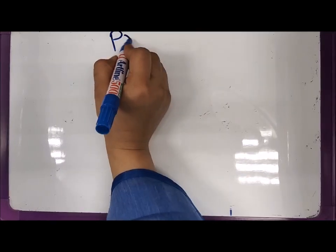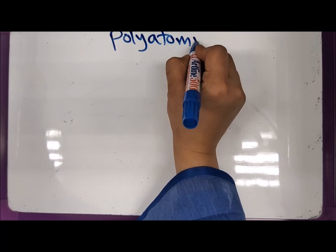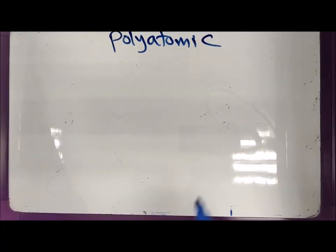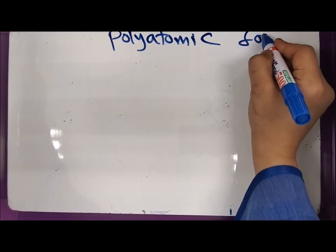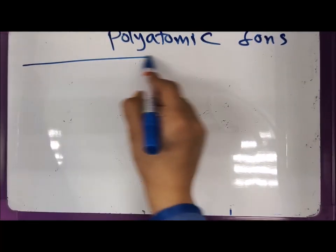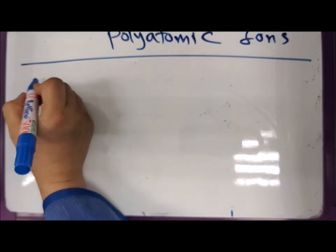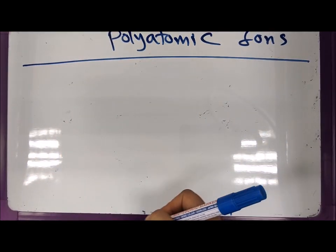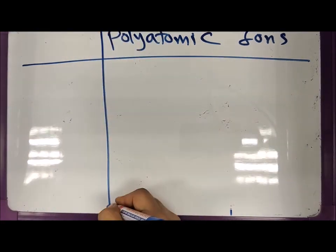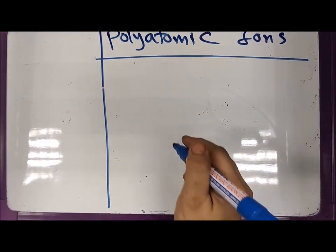There are some ions that you have to memorize — there's no other way. These are called polyatomic ions, meaning they have many atoms inside. Some ions are polyatomic and some are simple ones. The polyatomic ones are what you need to learn.